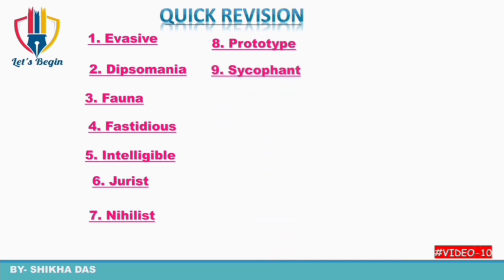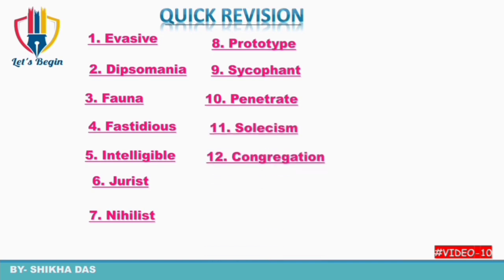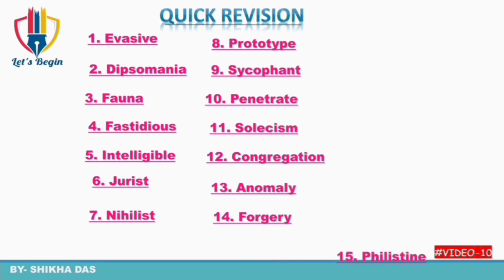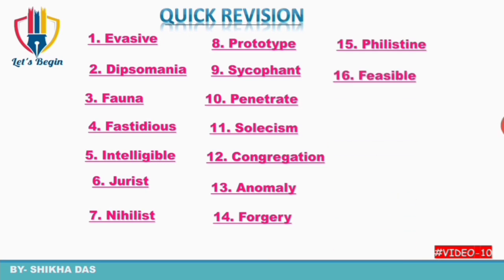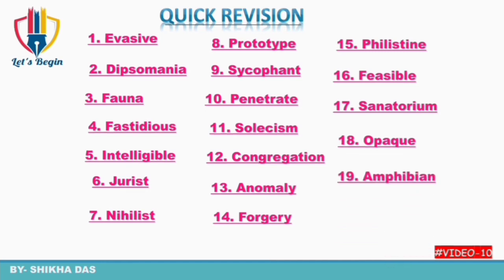Penetrate — ghusna ya bhedna. Solecism — grammatical mistake. Congregation — bhakton ka samuday. Anomaly — aniyamittha, asangati. Forgery — jaalsazi. Philistine — gawar, jo art aur literature ko nahi samajhta.